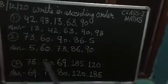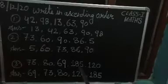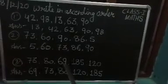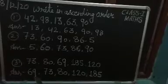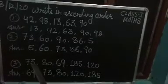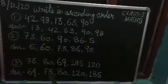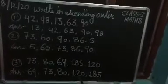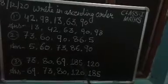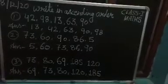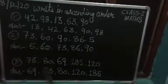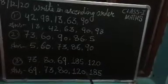Now, third one. 73, 80, 69, 185 and 120. 69 is the smallest number. So, first you will write 69. After that 73. Then this 80. Then you will write 120 and at last 185. So, this is the answer from smallest to the largest. Means ascending order.